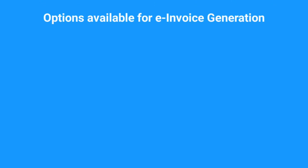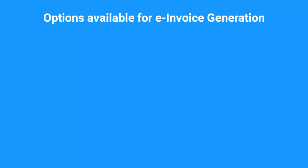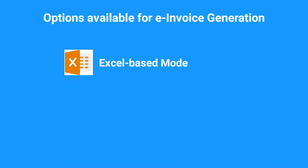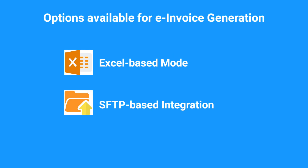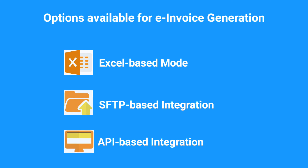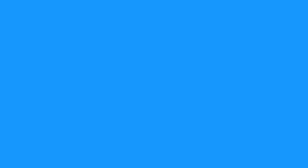Popularly, there are three options available for taxpayers to generate invoice reference numbers for e-invoice purposes. These are Excel-based mode, SFTP-based integration, and API-based integration. Let's dive into each of these options one by one.